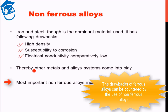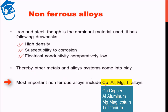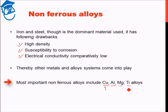The most important non-ferrous alloys that exist and are readily available are copper — one of the most important metals in addition to iron — and then we have aluminium, magnesium, and titanium. These are the most important non-ferrous alloys and we will discuss them one by one.